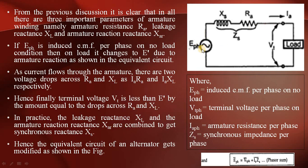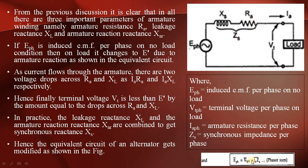E_phase is the induced EMF per phase on no-load condition. VT is the terminal voltage per phase on load condition. RA is the armature resistance per phase and ZS is the synchronous impedance per phase. The formula is: E_phase = VT_phase + Ia × ZS. This is the equivalent circuit of the alternator.